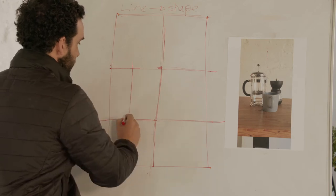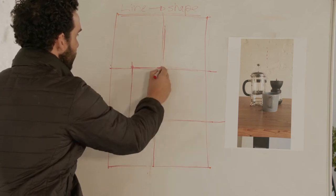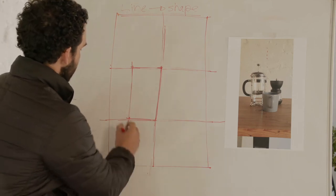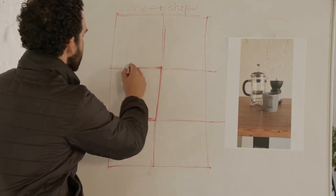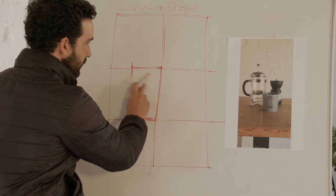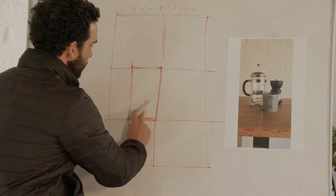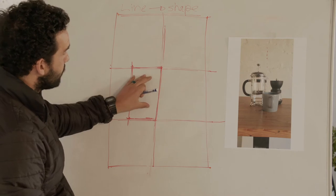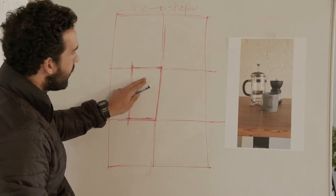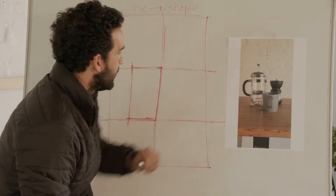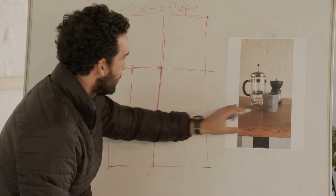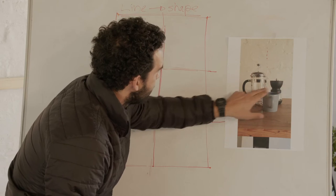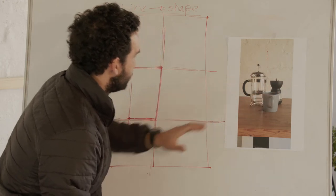So in this rectangle is my French press — everything that is the French press I'm going to draw within this shape. Very basic. Now I'm not done with the French press, but before I move on I need to address the other objects — how do I get the correct proportions and the relationships between them, and how do I transfer them onto the page?